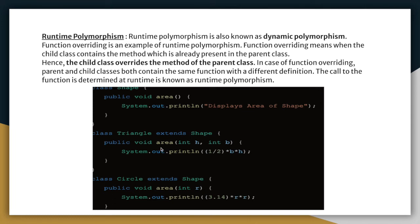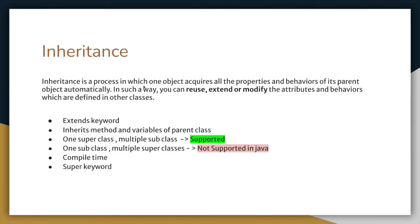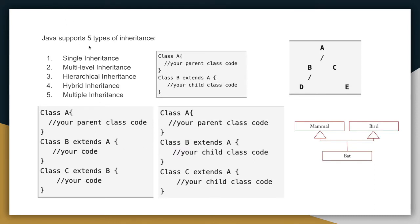Inheritance is a process in which an object acquires all the properties and behaviors of its parent object. It is implemented with the 'extends' keyword. A subclass inherits all the methods and variables of the parent class. One superclass with multiple subclasses is supported, but one subclass with multiple superclasses is not supported in Java. The 'super' keyword represents the parent class. Inheritance consists of five types: single-level, multi-level, hierarchical, hybrid, and multiple inheritance.